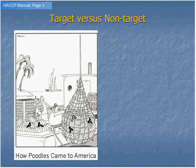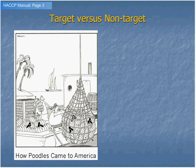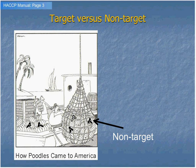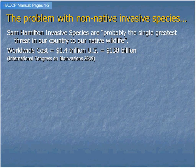Terms that are important for HACCP are target and non-target. Here's a cute cartoon I use all the time to describe this. In the invasive species world, sometimes when we mention targets we're talking about something we're trying to get rid of. In this cartoon about how poodles came to America, they're trying to ship bananas — so the bananas are the target, and the poodles are the non-target.